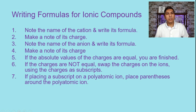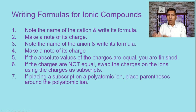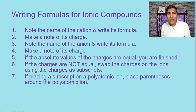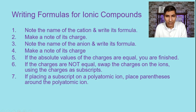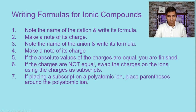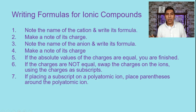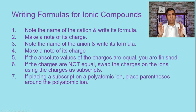Here we have the steps we're going to use as we write these formulas for ionic compounds. This list of seven steps looks lengthy and confusing, but we're going to work through them. Hopefully you'll find that working through these steps is actually fairly straightforward. The first steps say: note the name of the cation and write its formula, make a note of its charge, note the name of the anion and write its formula, make a note of its charge. If the absolute values of the charges are equal, you're finished. If not, swap the charges using them as subscripts. And if a subscript goes onto a polyatomic ion, place parentheses around it.